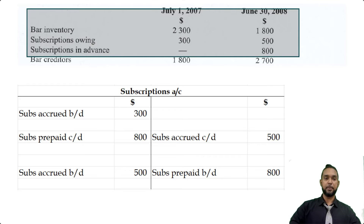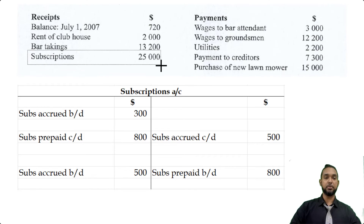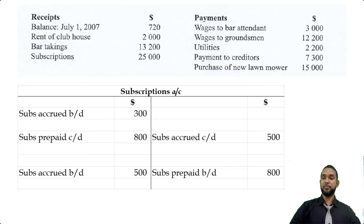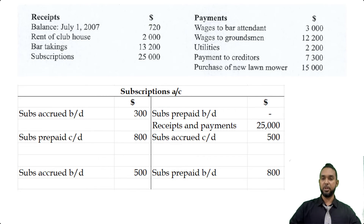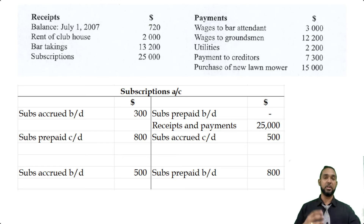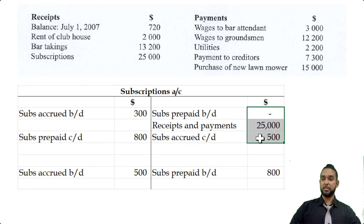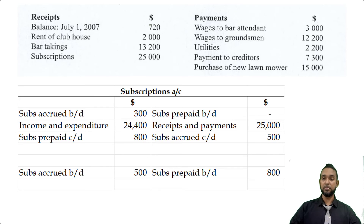We also have subscriptions received from the receipts and payments account: $25,000 on the debit/receipt side. When we receive money, we credit the subscriptions account. The missing balancing figure is subscriptions earned for the income and expenditure account. We add up the items on the credit side, add up the debit side, and subtract — the difference gives us subscriptions earned of $24,400. When we total up both sides, they both give us $25,500. That's the subscriptions account done.